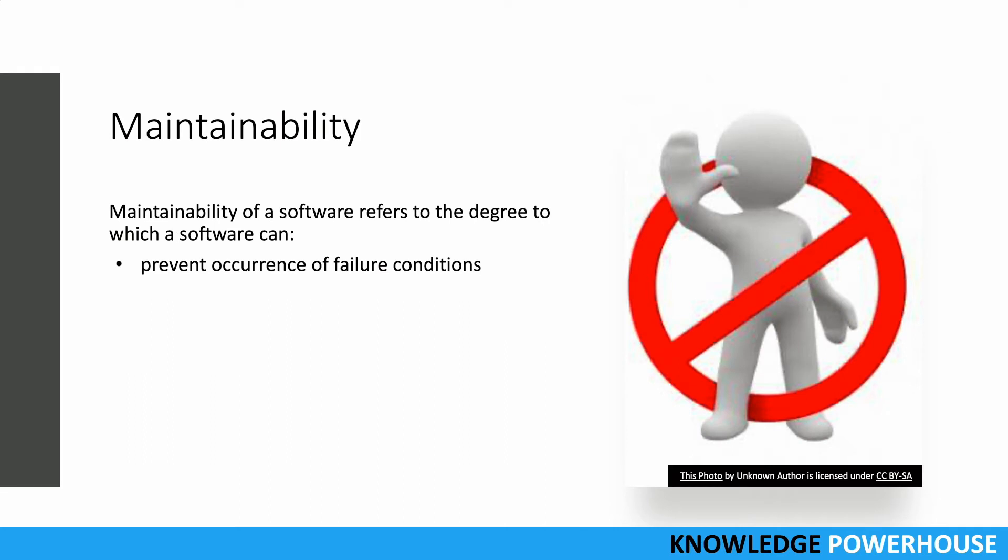Another aspect is to prevent occurrence of failure conditions. So if there are failure conditions that are going to happen and if we know about that, we can handle them gracefully or we can prevent them, right? So that is a degree to which we can prevent this using maintainability. So the defects do not have much impact.